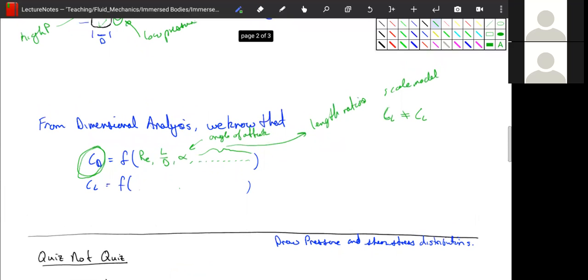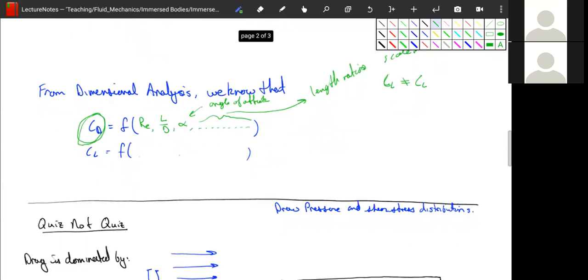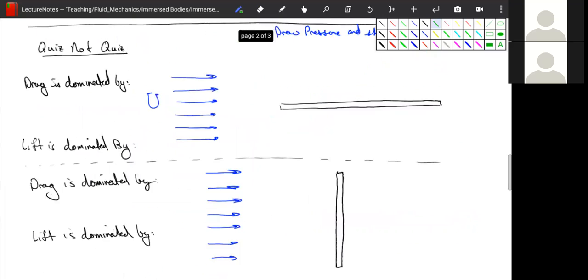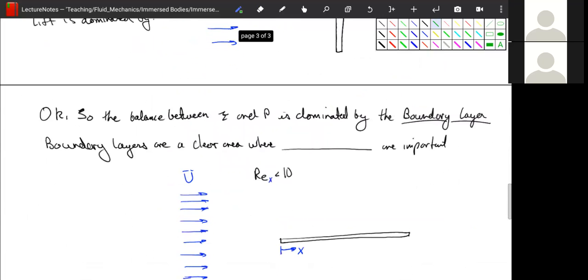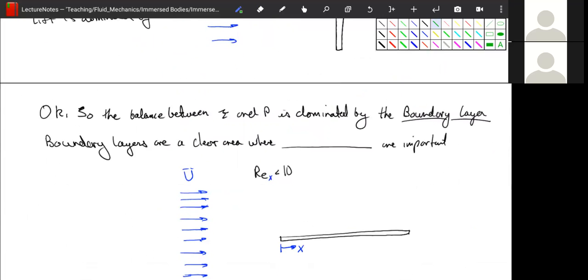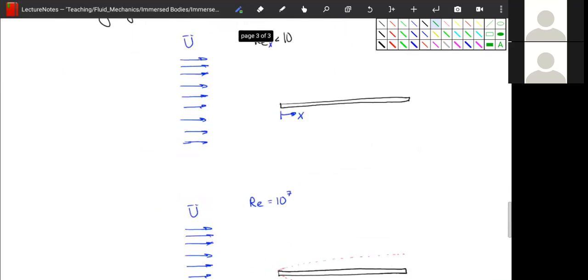Cool. So that's our vocab. That's our introduction. In the next section, we are going to talk a lot more about what happens. We're going to do a quiz about reviewing this. And then we're going to talk a lot more about what happens when we get into what's called a boundary layer. And what happens in the boundary layer, how it's defined.